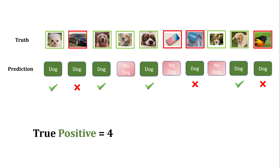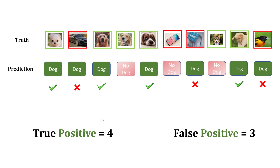Whichever predictions are correct here are called true positives. The word 'positive' — the second word — means your positive class, which is dog. So out of those positive predictions, how many of them are truly correct? When you compare all this with reality, we found only four predictions were true for dog and three were wrong.